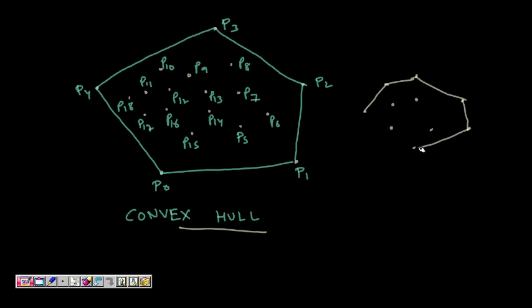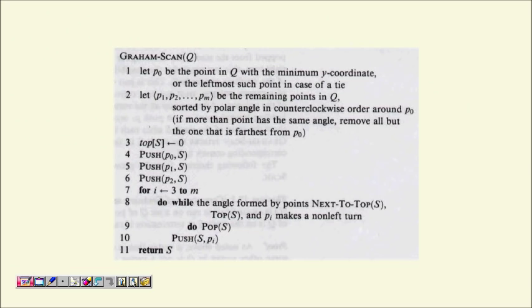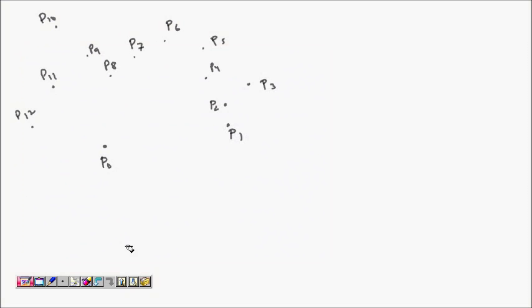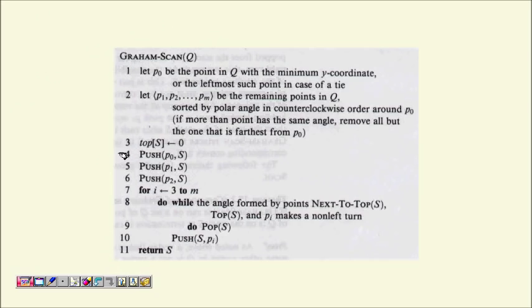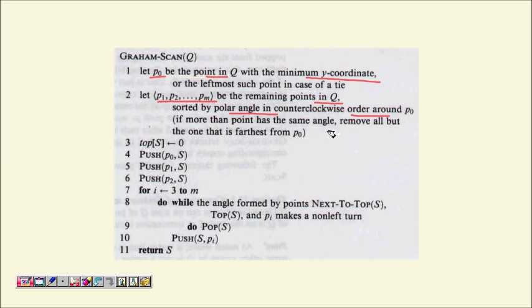Before that, let's read the algorithm. Graham Scan works as follows: you are given points from p0 to pm. Let p0 be the point in the set Q with the minimum y-coordinate. If you have multiple such points with minimum y-coordinate, break the tie with the leftmost of them. We are left with points p1, p2 till pm in set Q, and we sort them by polar angle in counter-clockwise order starting from p0.